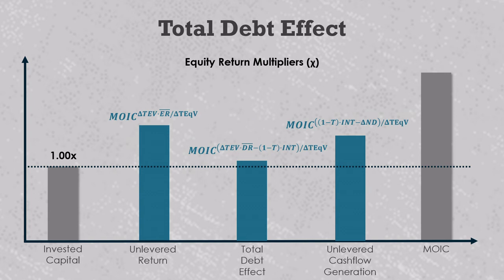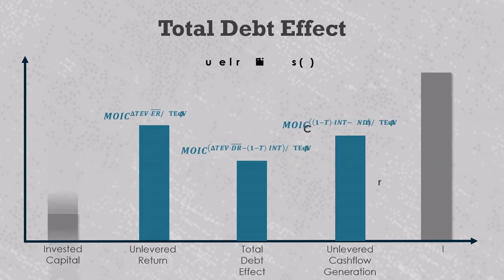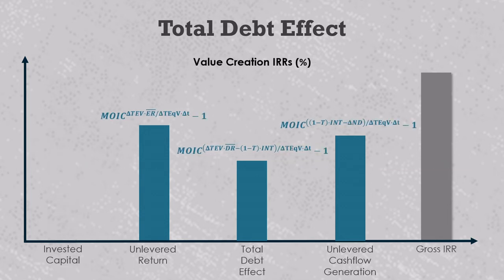In this domain, value drivers that are greater than 1.0x increase equity value and value drivers that are less than 1.0x decrease equity value. When you multiply all the value drivers together, you get the total equity return multiple of invested capital. And then finally, you can raise the equity return multipliers to one over the effective holding period and subtract one to get the value creation IRRs. Please go back to the video of VC106 if you want more information on how this math works.